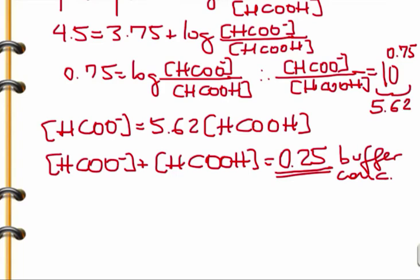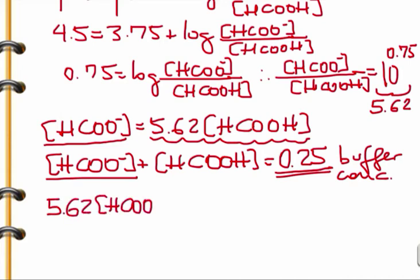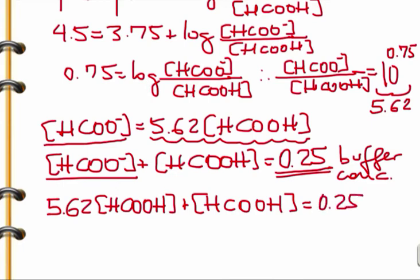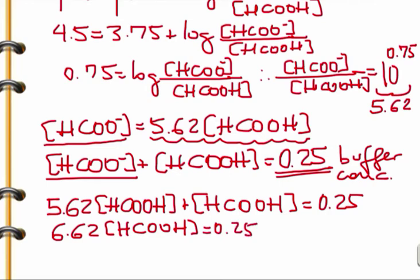Now we substitute: replace [HCOO⁻] with 5.62 times [formic acid], giving 5.62[formic acid] plus [formic acid] equals 0.25. That combines to 6.62[formic acid] equals 0.25. Therefore, the concentration of formic acid in the buffer is 0.25 divided by 6.62, which equals 0.038 molar.